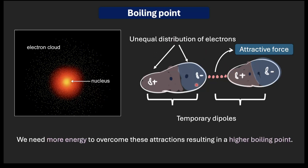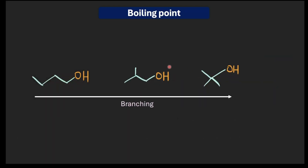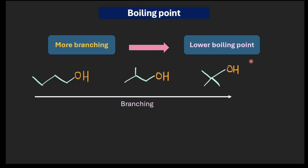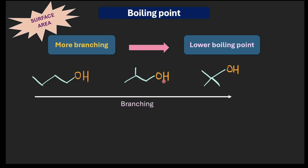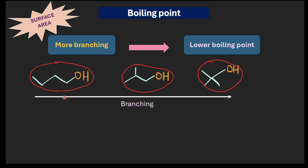The second crucial factor affecting boiling point is branching. The more branched an alcohol gets, the lower its boiling point. This comes down to surface area — as molecules branch, they become more spherical or compact, reducing the surface area available for neighboring molecules to interact with each other. This diminishes the strength of the van der Waals forces. A larger surface area allows more points of contact and greater interaction between the electron clouds of neighboring molecules.